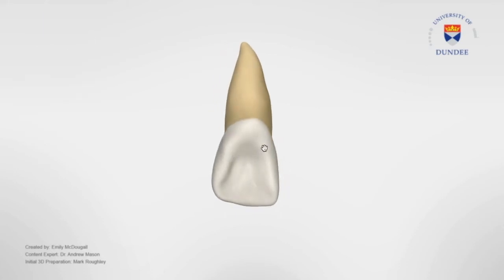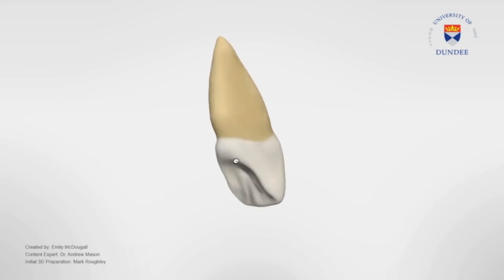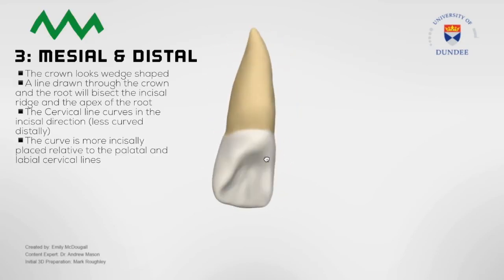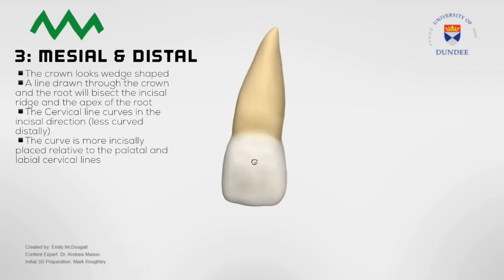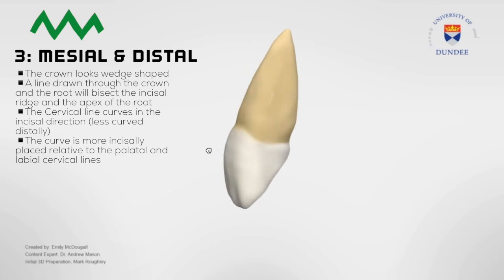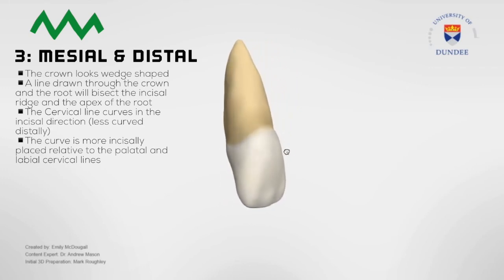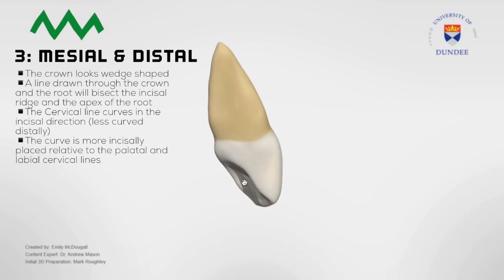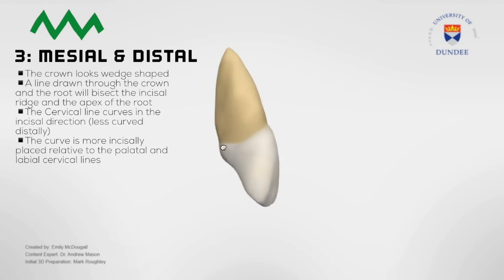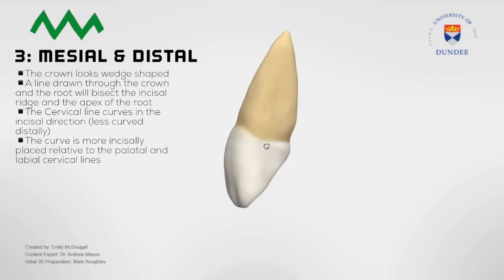The mesial and distal viewing aspects consider the portion of the tooth visible from the side closest to and furthest from the midline of the face, respectively. From these viewing aspects we can observe that the crown looks wedge shaped. A line drawn through the crown and the root will bisect the incisal ridge and the apex of the root. The cervical line curves in the incisal direction — less curved in the distal view but more curved in the mesial view.